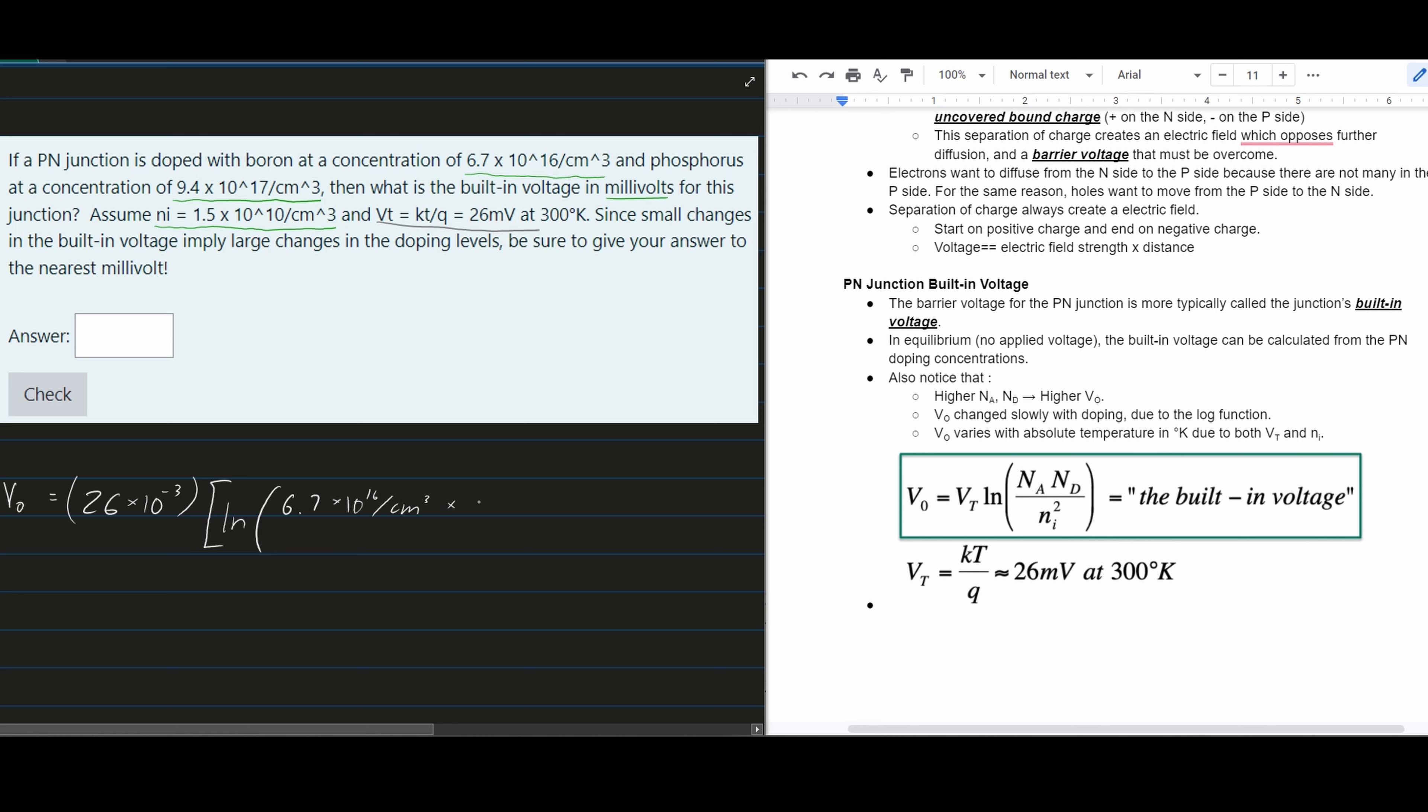This is multiplied by Nd, which is 9.4×10¹⁷ per cm³, and the product is divided by Ni squared.